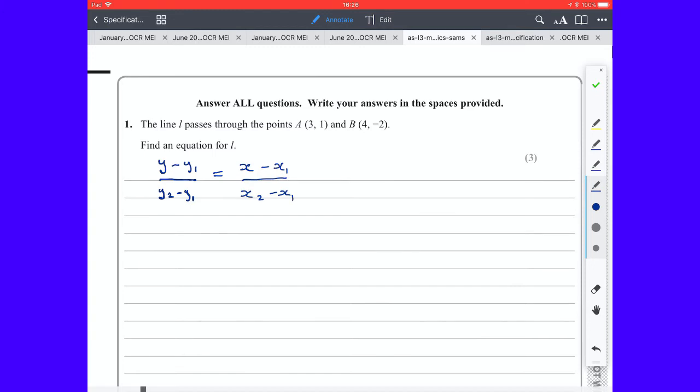For A we'll call that x₁y₁ and for B we'll call that x₂y₂. So that would give us (y - 1)/(-2 - 1) equals (x - 3)/(4 - 3).